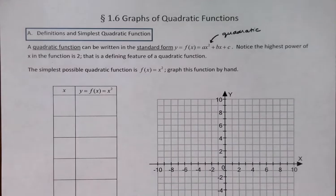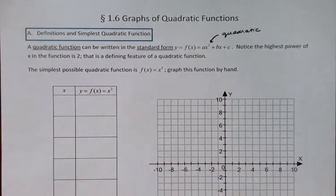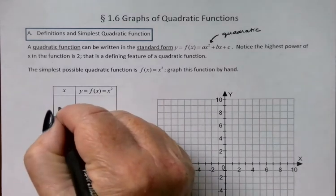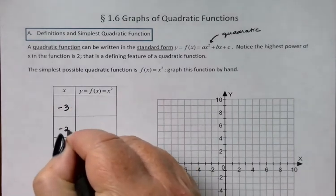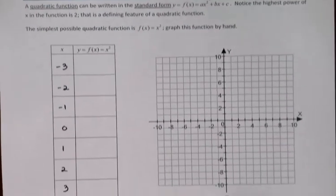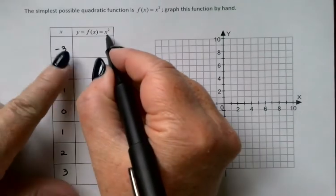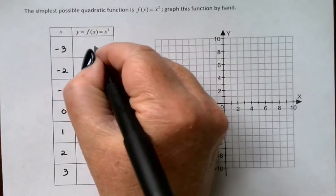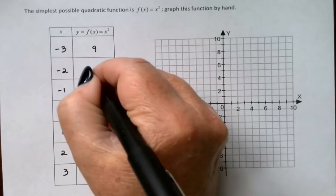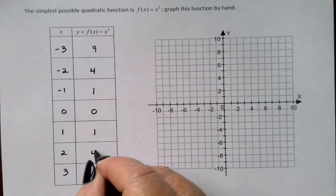We're going to start with the simplest possible quadratic function, just f of x equals x squared. And I'd like to sketch this particular one by hand. I'm going to choose x values running from negative 3 to positive 3. And since the y value is just the square of the x value, negative 3 squared would be 9, negative 2 squared is 4, and so on, just squaring all those x values.